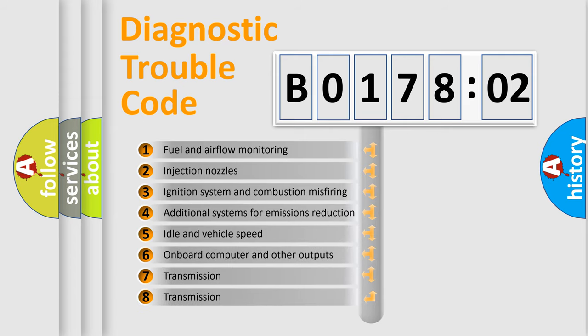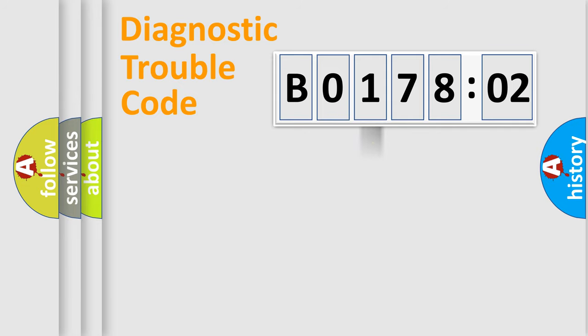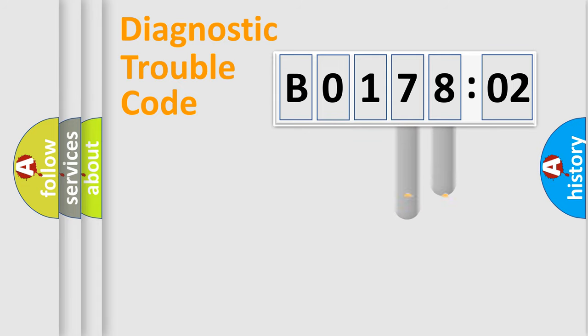The third character specifies a subset of errors. The distribution shown is valid only for the standardized DTC code. Only the last two characters define the specific fault of the group.